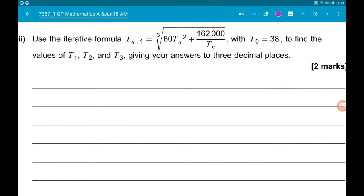So put in t0, so 38, and then press equals. Now put in the iterative formula. Wherever there is a t(n), press the ANS button. Now press equals. Once you've got the formula in, you will get t1 is 44.963.